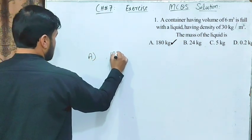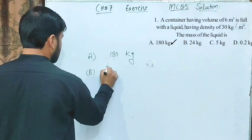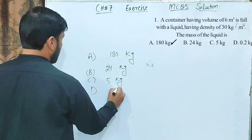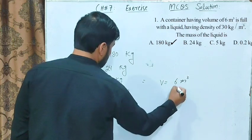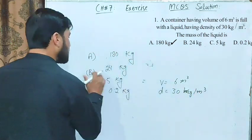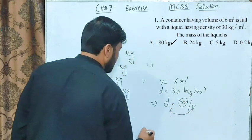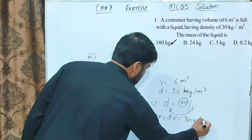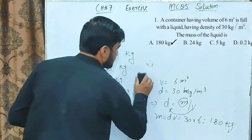Option A: 180 kg. Option B: 24 kg. Option C: 5 kg. Option D: 0.2 kg. To solve this, volume equals 6 meter cube and density equals 30 kilogram per meter cube. By definition, density equals mass per unit volume, so mass equals density multiplied by volume: 30 times 6 equals 180 kg. Correct option is A: 180 kg.